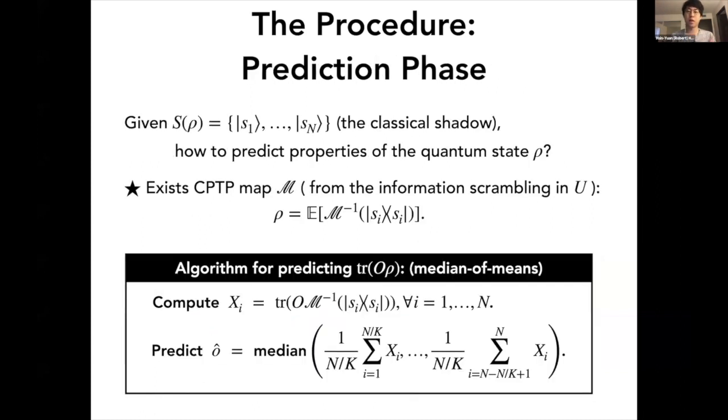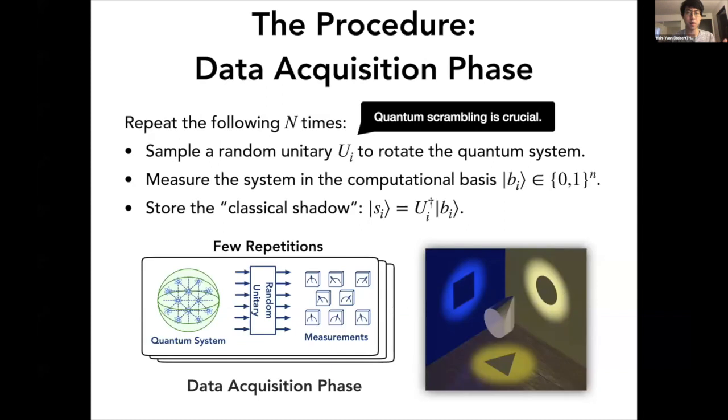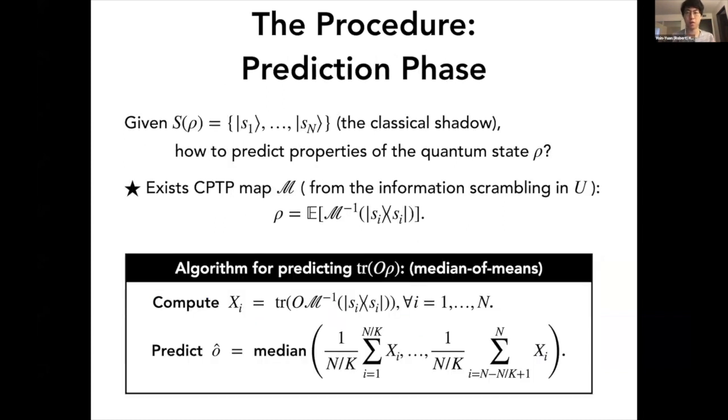So after you have obtained this classical shadow, so actually you repeat this step for n times, so you obtain an array of the states s1 to sn. What you would do next is, how would you predict properties when you wanted to, let's say, estimate trace of rho O for some observable O?